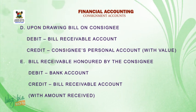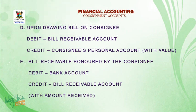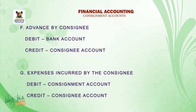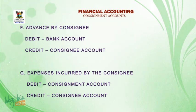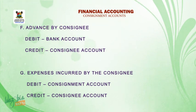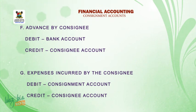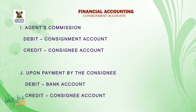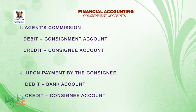E, bill receivable honoured by the consignee: debit bank account, credit bills receivable account with amount received. F, advance by consignee: debit bank account, credit consignee account. G, expenses incurred by the consignee: debit consignee account, credit consignment account. I, agent commission: debit consignment account, credit consignee account.